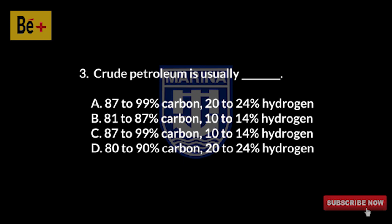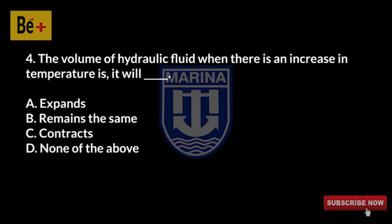Crude petroleum is usually: A) 87 to 99 percent carbon, 20 to 24 percent hydrogen, B) 81 to 87 percent carbon, 10 to 14 percent hydrogen, C) 87 to 99 percent carbon, 10 to 14 percent hydrogen, D) 80 to 90 percent carbon, 20 to 24 percent hydrogen. The answer is B, 81 to 87 percent carbon, 10 to 14 percent hydrogen.